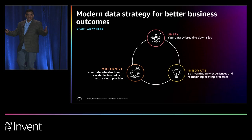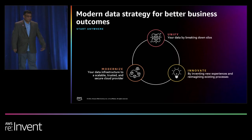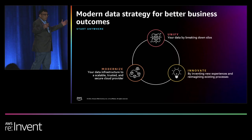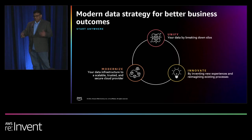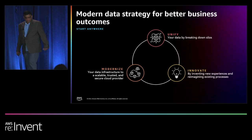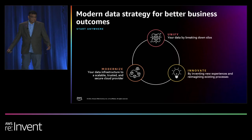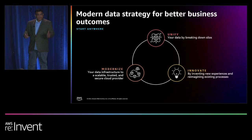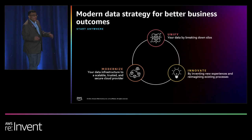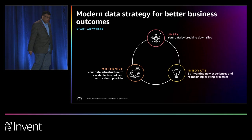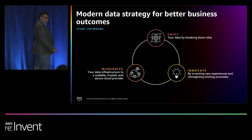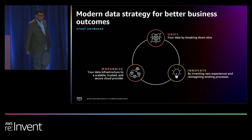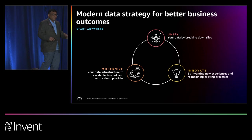You should modernize your data infrastructure by moving to cloud rather than self-managing the infrastructure. You need to unify your data by breaking down data silos so that data can be put to work across databases, data analytics, and machine learning services. The third pillar of modern data strategy is Innovate, where you can invent new experiences and reimagine existing processes. With modern data strategy, you can move and store any amount of data and access it seamlessly. You can also control who has access to the data with proper security and data governance controls. These pillars do not require sequential implementation — you can be working on all three in parallel depending upon your data journey.